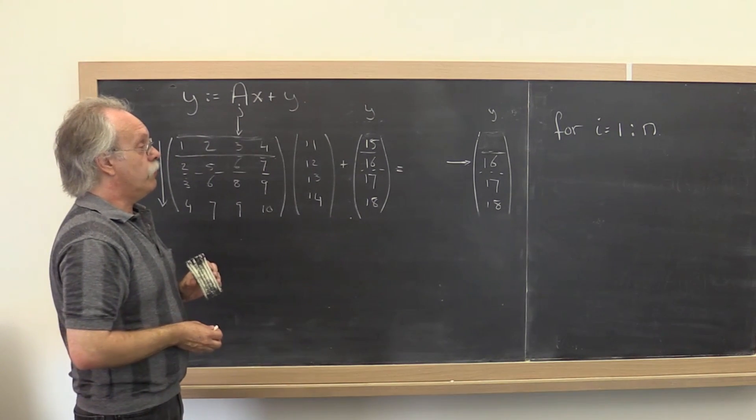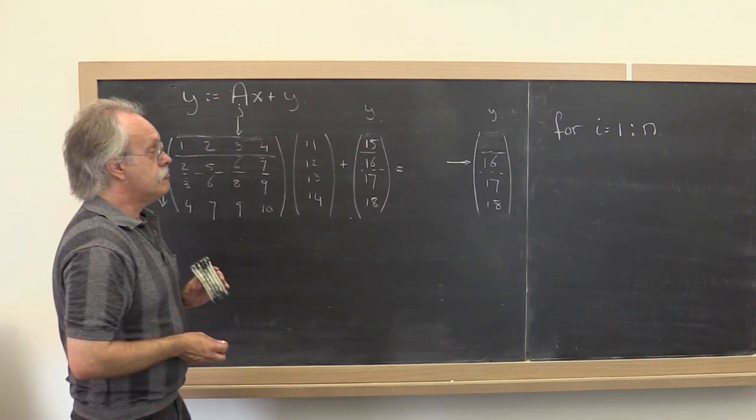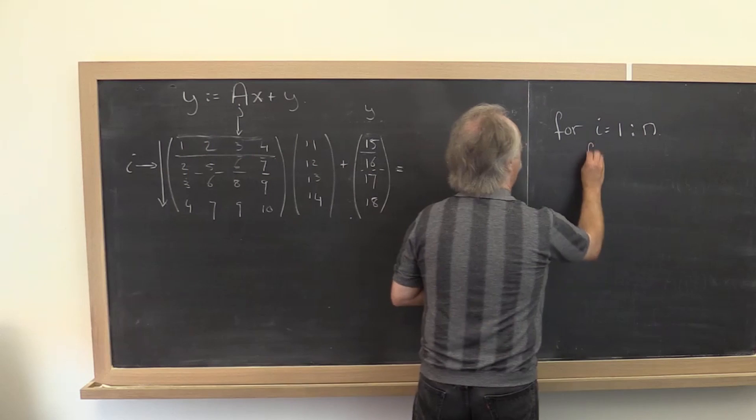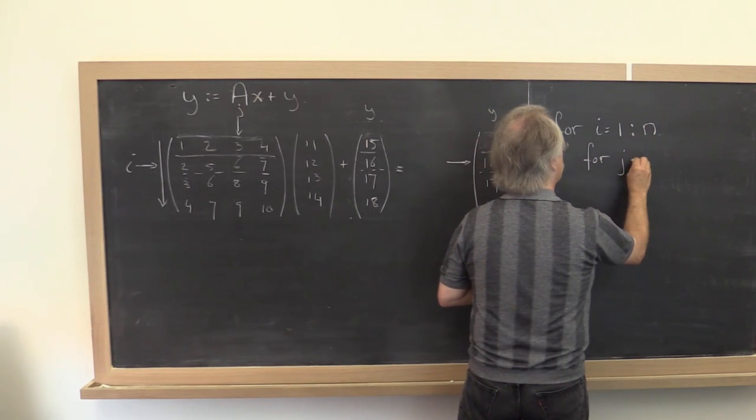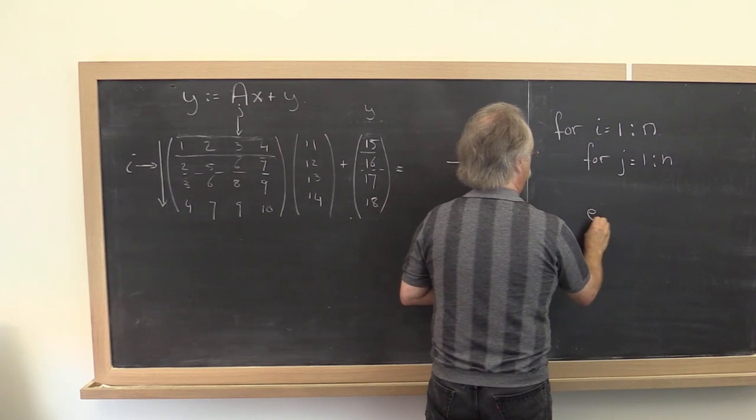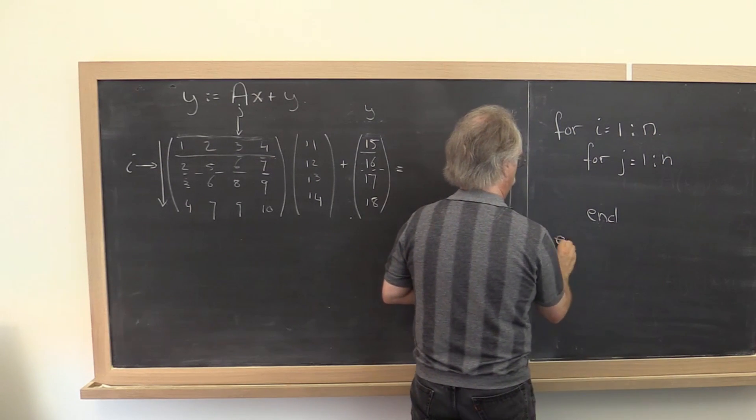So we say for i equals 1 to n. And then you would need to do the dot product. So that would give us a loop for j is equal to 1 to n. And then you have an end and you have an end.